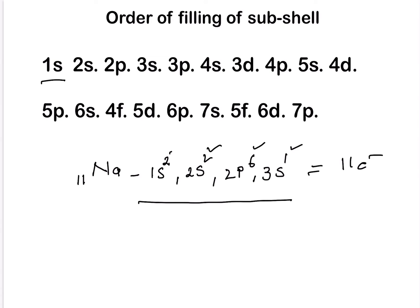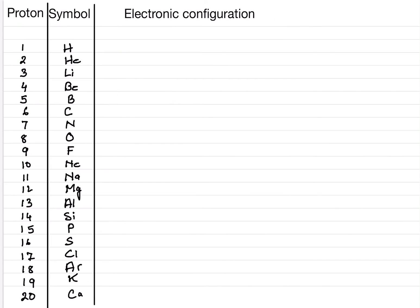Let us do the first 30 elements one by one so your doubts will become clearer as you practice. Hydrogen has atomic number 1, so its configuration is 1S1. Helium has 2 electrons, so it is 1S2. Lithium is 1S2 2S1, giving 3 electrons total.